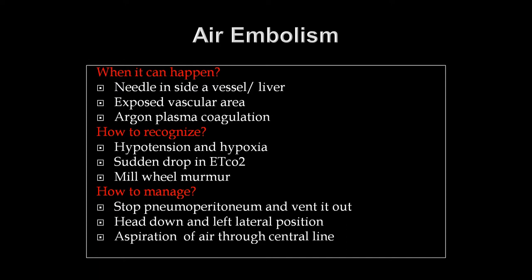Air embolism is rare but can happen if the needle is inside a vessel or liver tissue — exposing the vascular area — or during argon plasma coagulation where a lot of gas is used. The patient usually becomes hypotensive and hypoxic, with a sudden drop in end-tidal CO2 and a mill-wheel murmur. Once recognized by the anesthetist, immediately stop the pneumoperitoneum and release the CO2, then place the patient in the head-down left lateral position and pass a central line to aspirate air from the right ventricle.